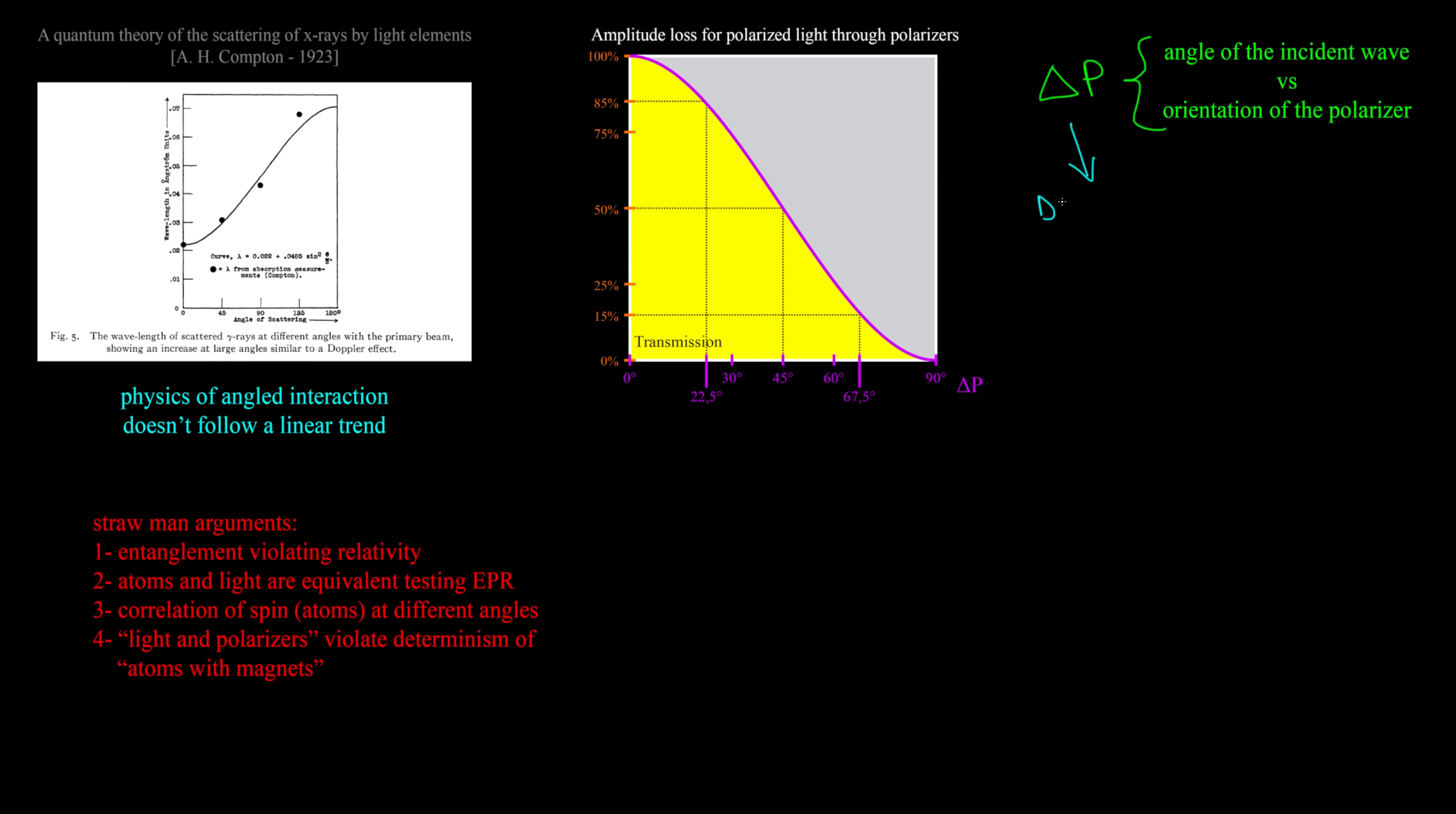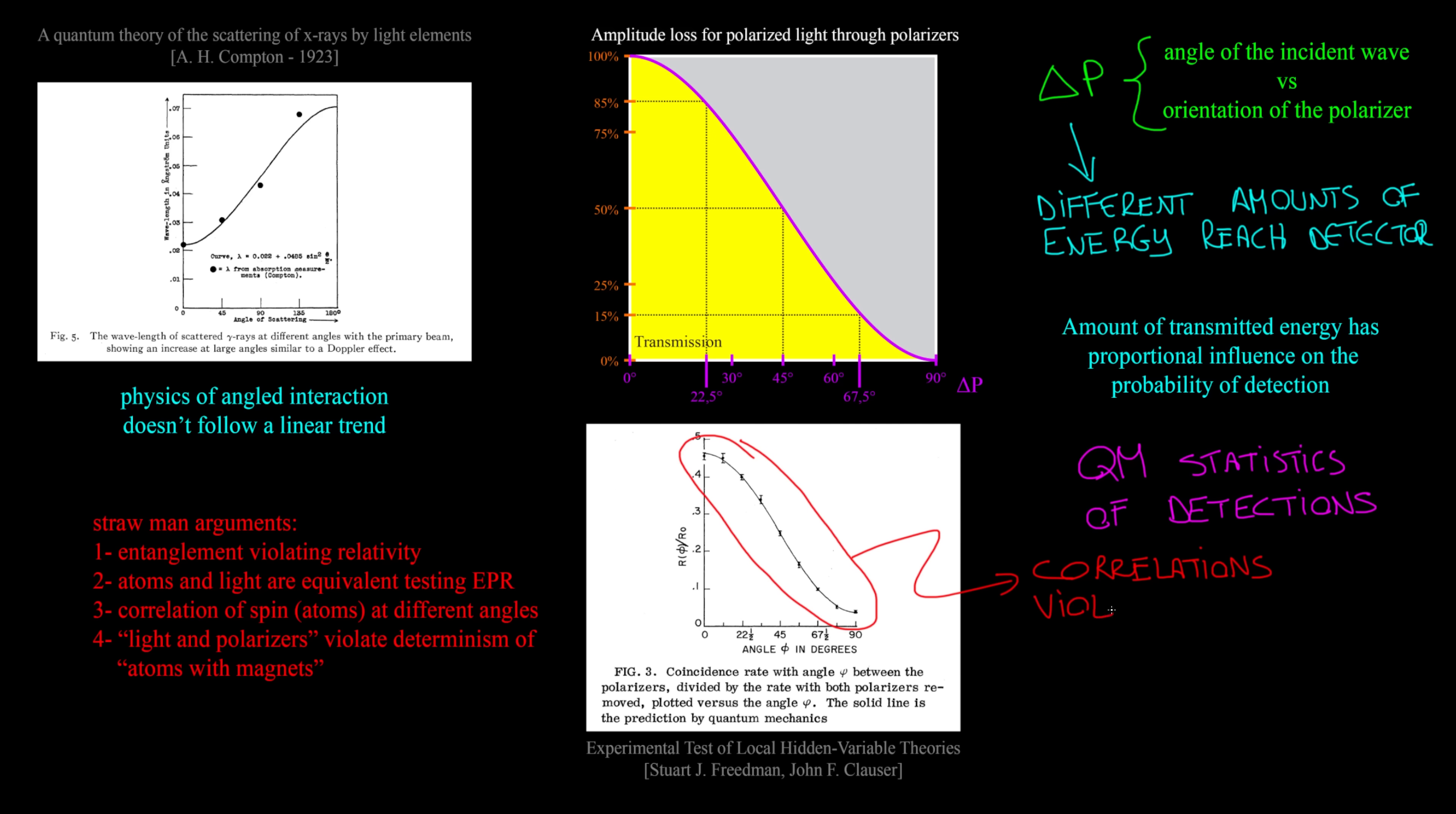According to the angle of interaction between wave and polarizer, different amounts of energy can reach the detector. The amount transmitted has proportional influence on the probability of detection, and this is exactly what we observe within all experiments that should prove the quantum correlation impossible for hidden variables. Since quantum mechanics is statistics of detections over thousands of executions, the curve that is passed off as correlation violating classical physics is just how probable is detection according to the amount of energy that is transmitted. So there is nothing quantum here, it's determinism with hidden variables.